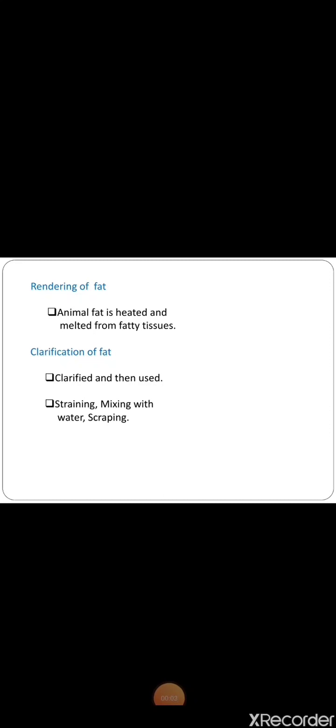Clarification of fat. Used fat should be clarified and then used for better results in cooking. Strain and use the fat and then mix double the quantity of water in a pan and bring to the boil. Strain again. Cool and place in the refrigerator. The fat will solidify and float on the top. Lift the cake of fat. Turn it upside down and scrape off the foreign particles that have collected. Heat the fat on slow fire till the water evaporates and then strain and store it in a cool place.